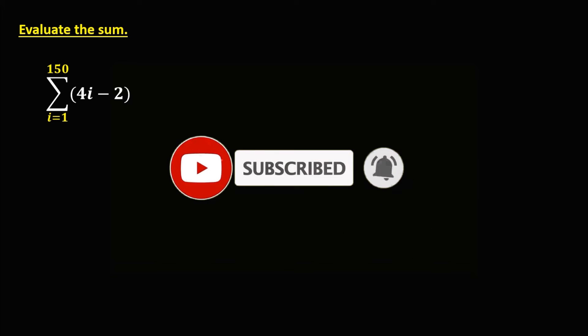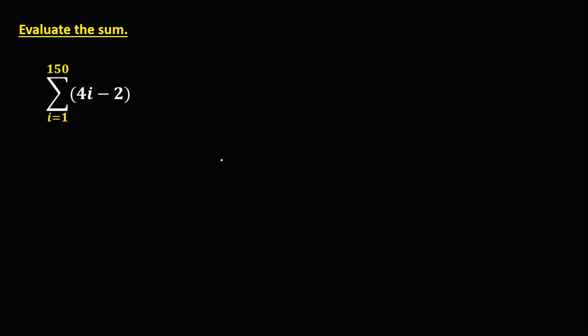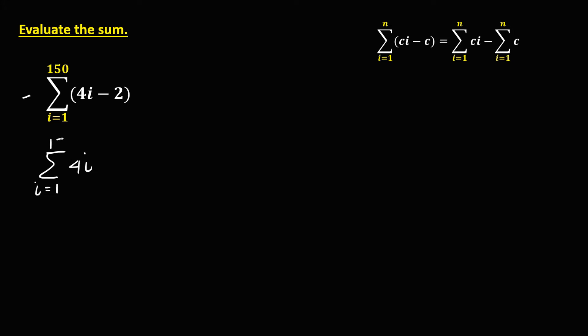So let's have this problem. To evaluate the sum of this sigma notation using this property — that the summation of a constant times I minus a constant is equal to the summation of the constant times I minus the summation of the constant — we can rewrite this as the summation of 4 times I, where I starts from 1 to 150, minus the summation of 2, where I starts from 1 to 150.